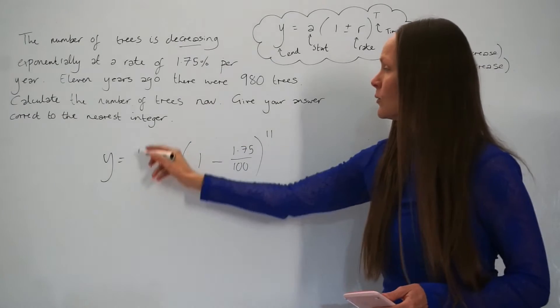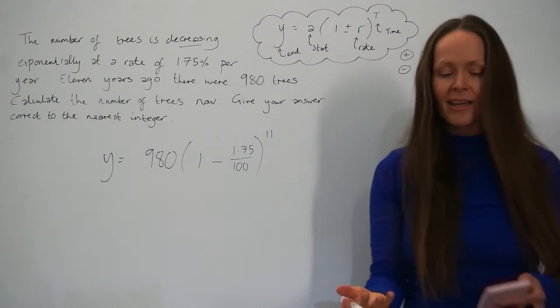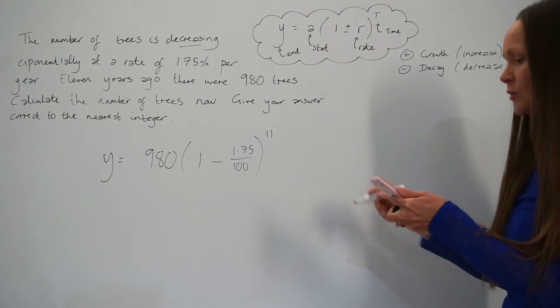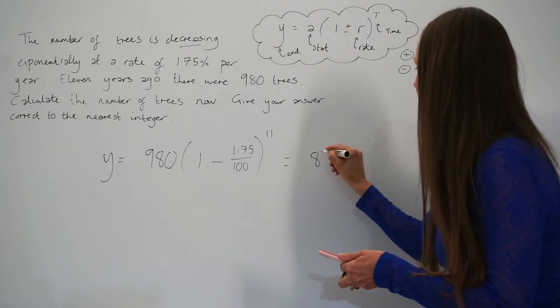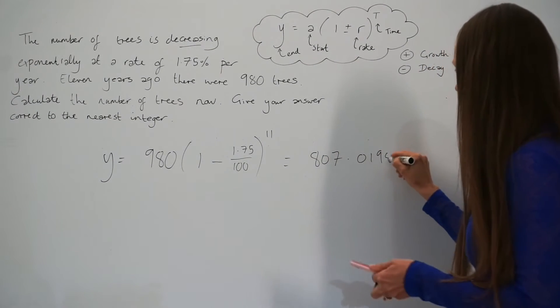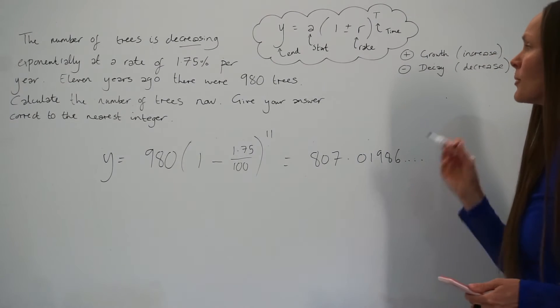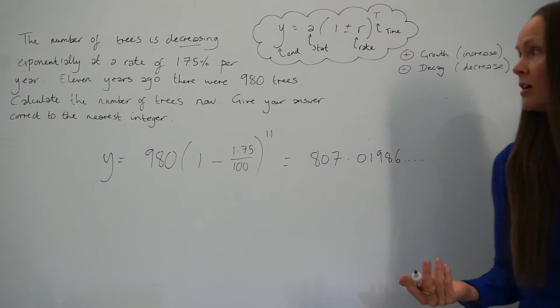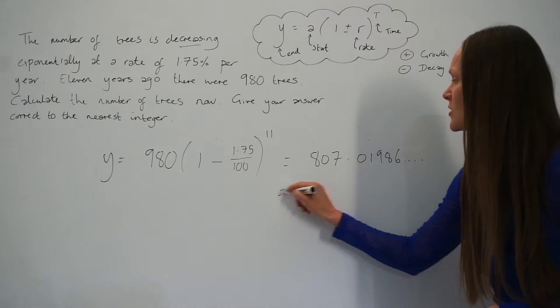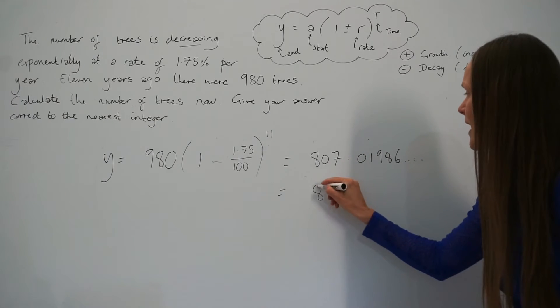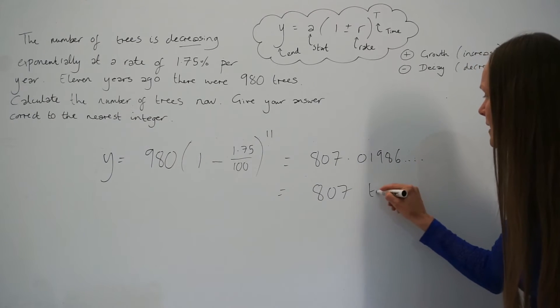So now I've filled in all the values. I can type that into the calculator. And when you do that, you should find that you get 807.01986 and so on. But remember, to get full marks, we have to give the answer correct to the nearest integer, so the nearest whole number. So check the digit after the decimal point, so it's 0, so it doesn't round this number up, so we're left with 807 trees.